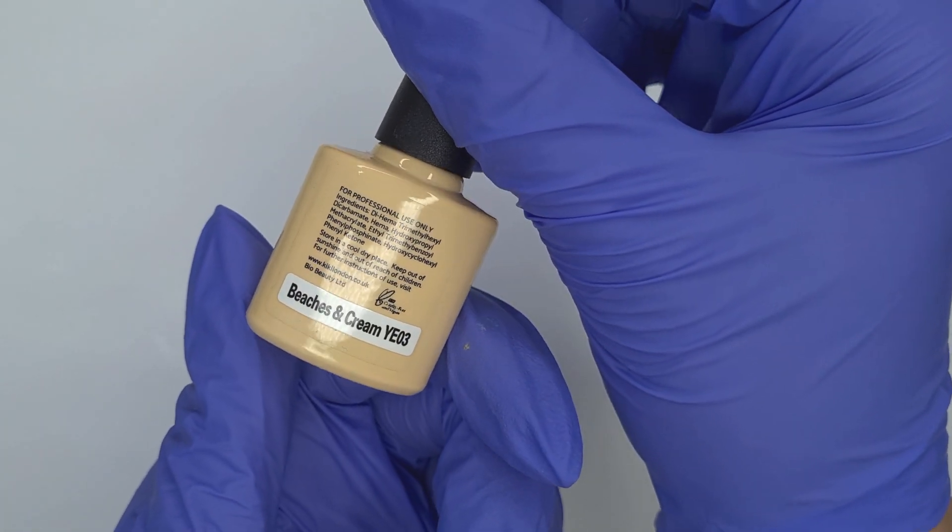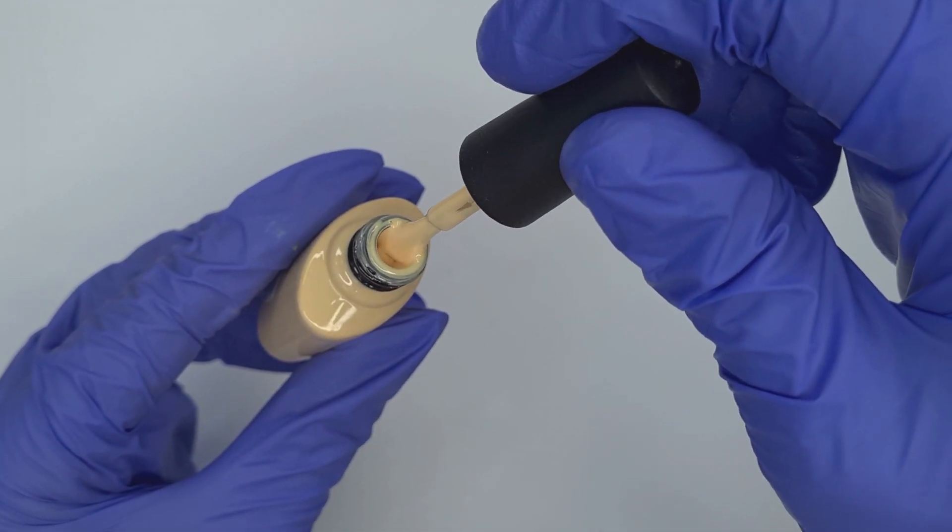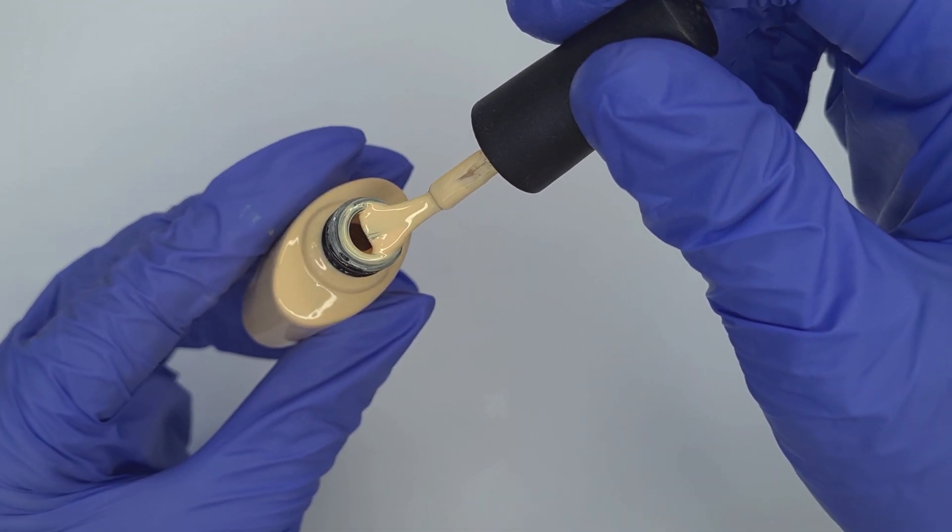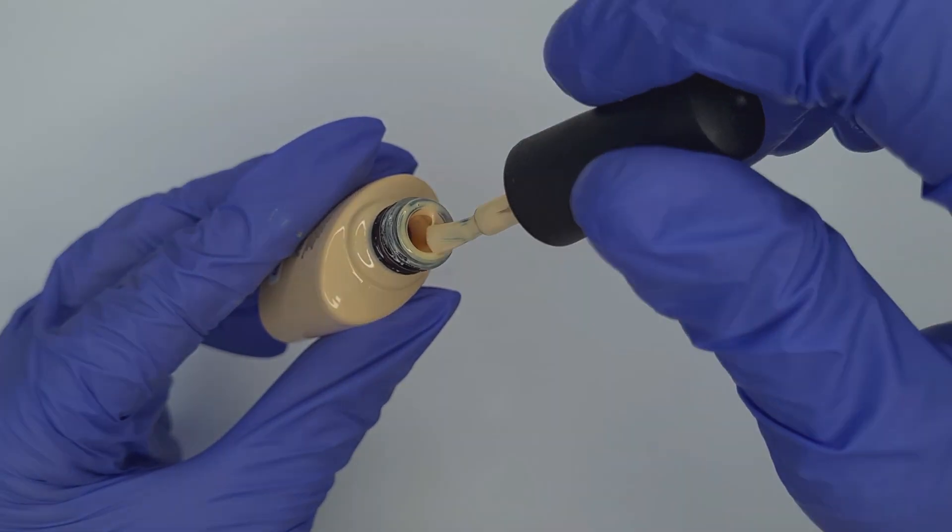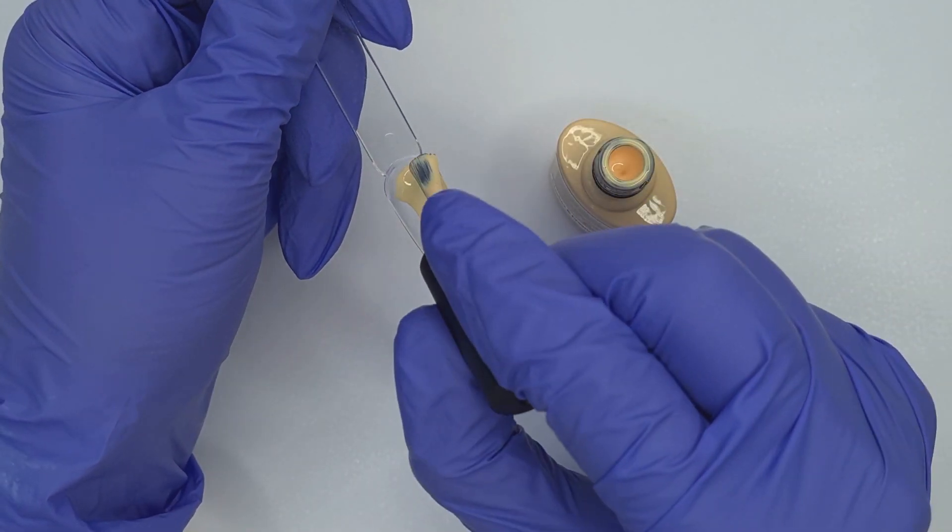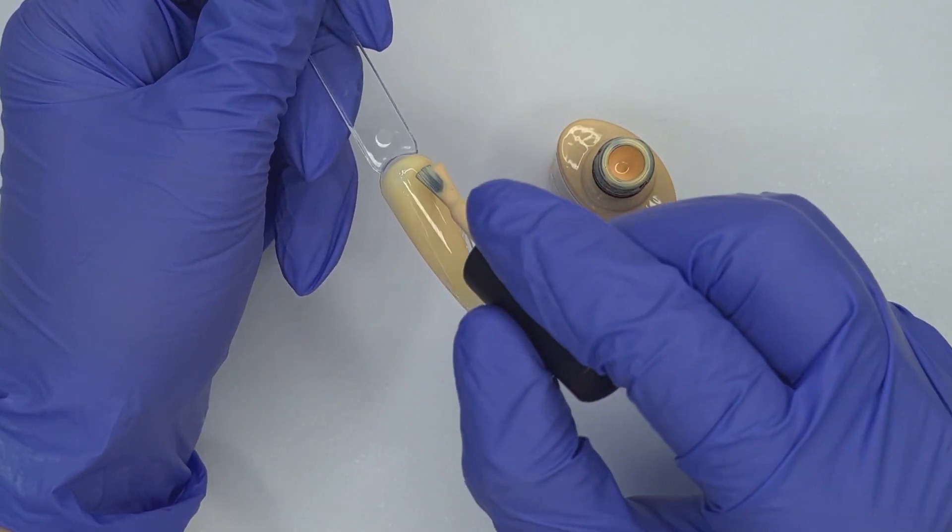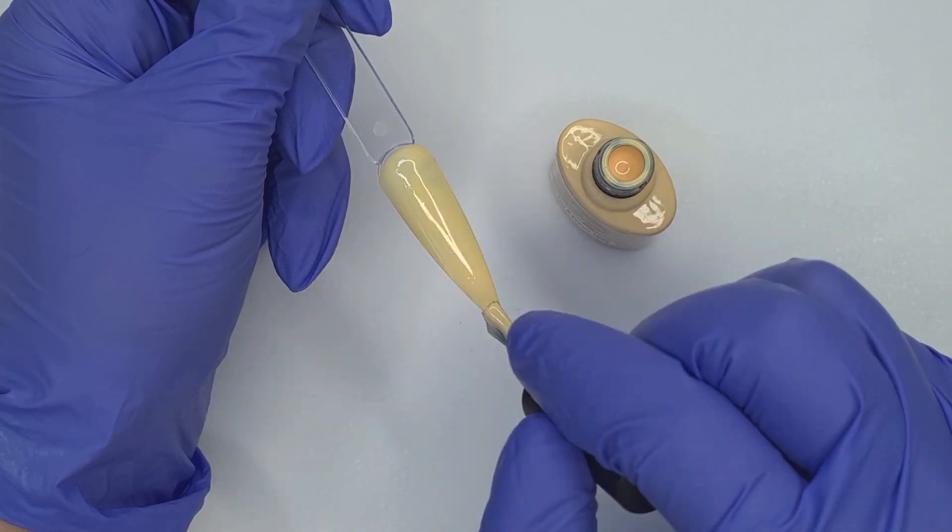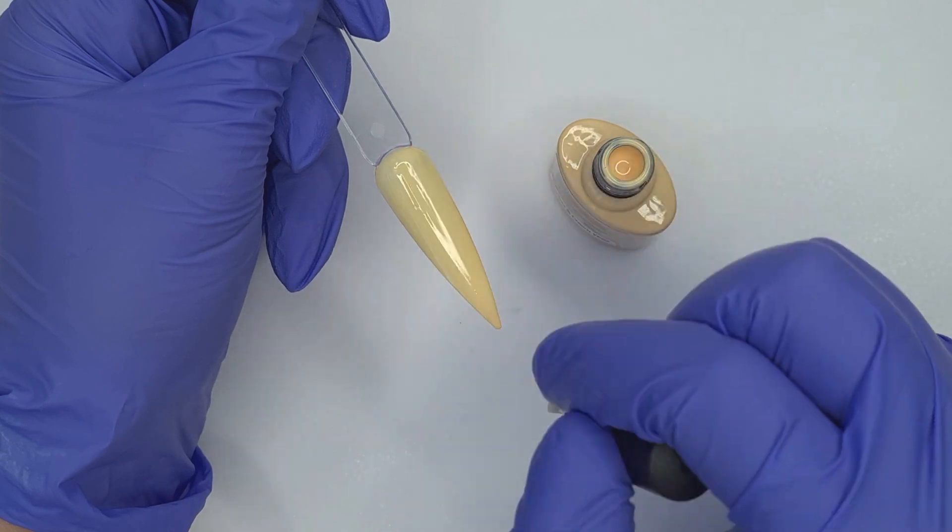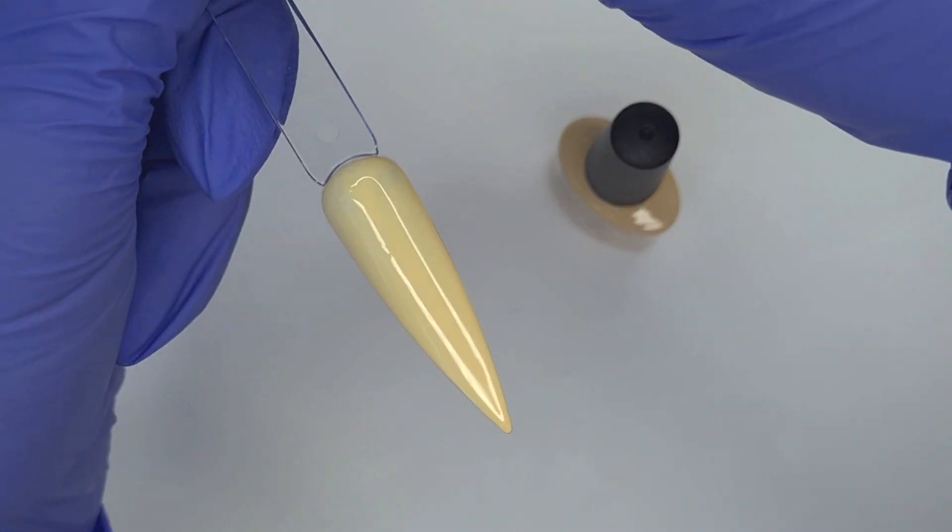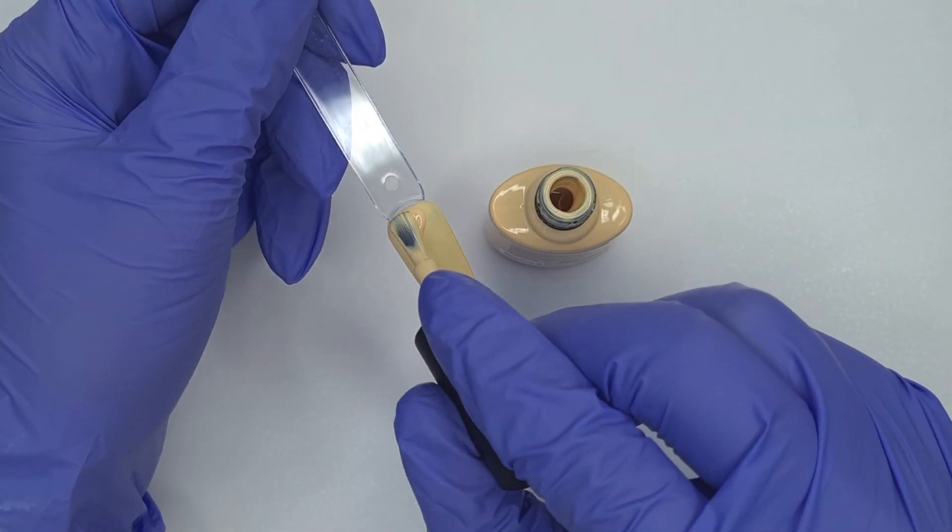Now we have Beaches and Cream. I love the name of this one and as it suggests it's a perfect color for doing any beach set of nails. It's got that gorgeous sandy creamy color to it. This applies really really nicely as well. Like I said a lot of the colors in this collection have that creamy consistency so they just go on really really nicely. Keep that nice and thin though and once I've got that first coat down I'm going to pop that in to cure.